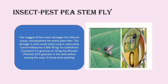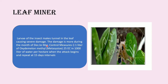Coming to leaf miner, the larvae make tunnels in the leaf causing severe damage. This damage is more during the months of December to March. Control measures include spraying 1 liter of oxydemeton-methyl 25 EC in 1000 liters of water per hectare when the attack begins, and repeat at 15 days interval.